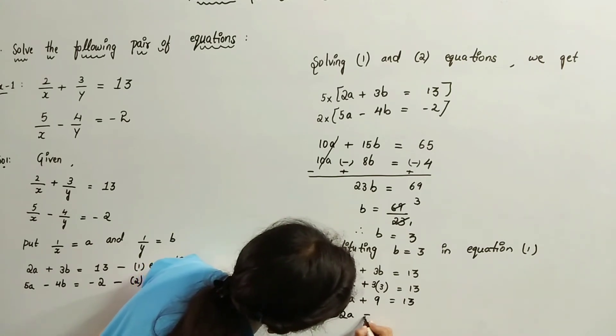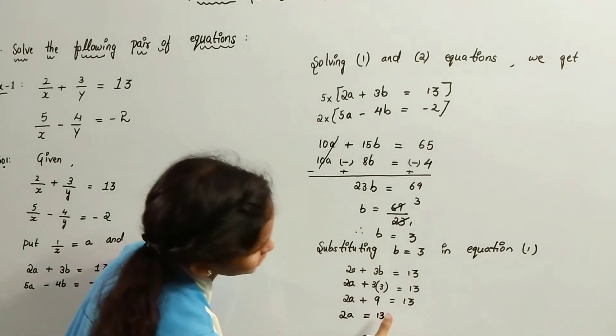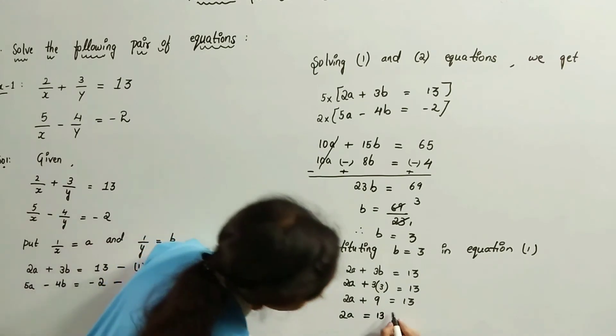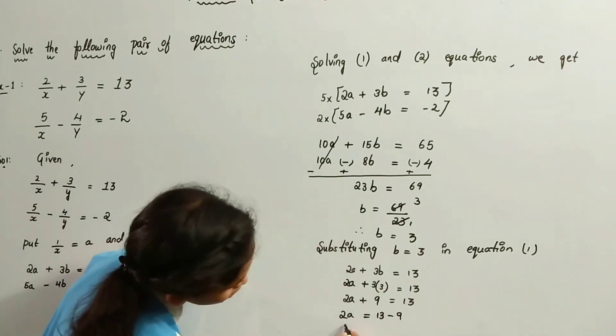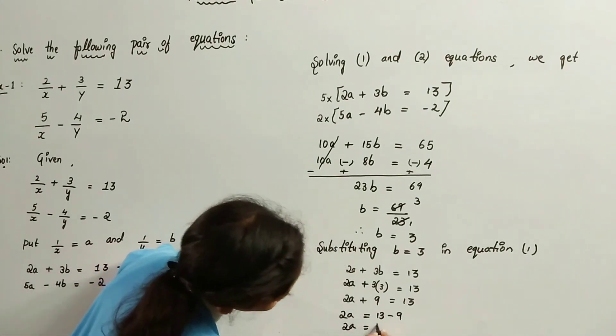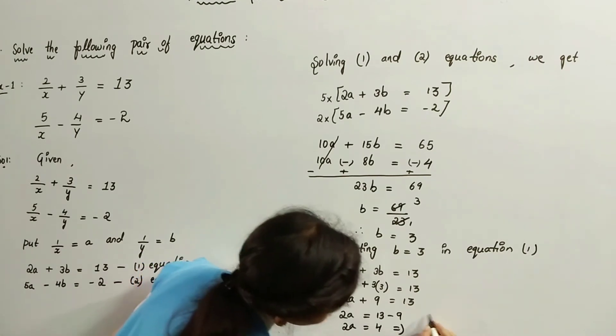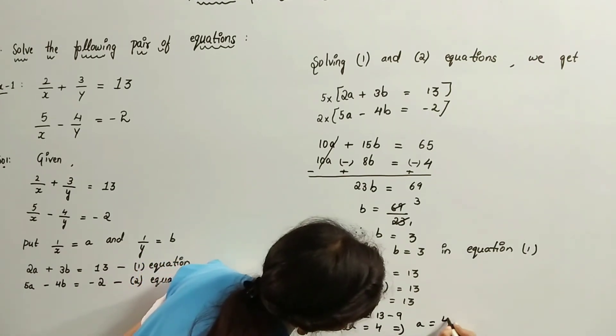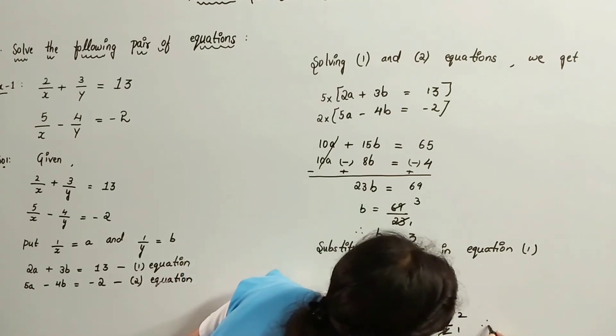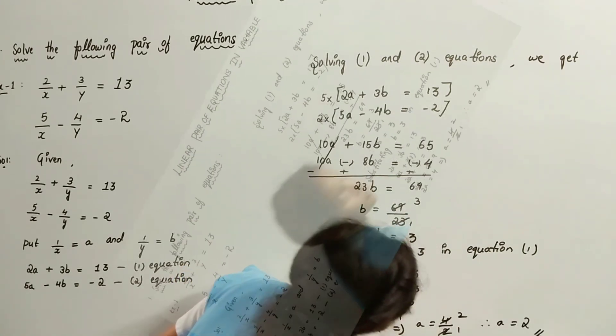2a equals 13. Transpose plus 9 to the right hand side, it becomes minus 9. 2a equals 4. That implies a equals 4 by 2. 2 twos are 4. Therefore, a equals 2.